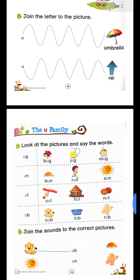The U family. Look at the picture and say the words. U, G — ug. B, U, G — bug. Bug means kya hota hai? Kida. J, U, G — jug.